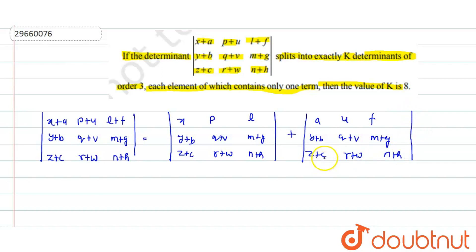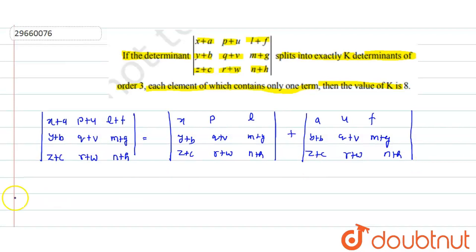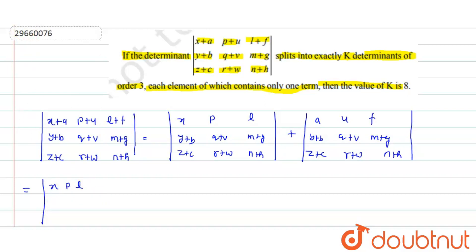Now I think about how we can do the second row. This is also quite easy. I have to do determinant spread on the first row, and then the second row will also be split. So if I look at: x, p, l; then y+b, q+v, m+g — we split into y, q, m and b, v, g. Then z+c, r+w — each row splits similarly.